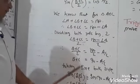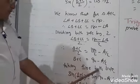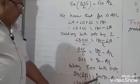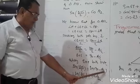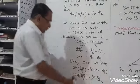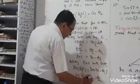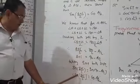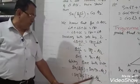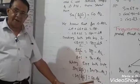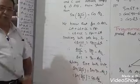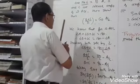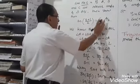Taking sin on both sides: sin((B+C)/2) is equal to sin(90° minus A/2), and sin(90° minus A/2) equals cos(A/2). Therefore, sin((B+C)/2) is equal to cos(A/2).